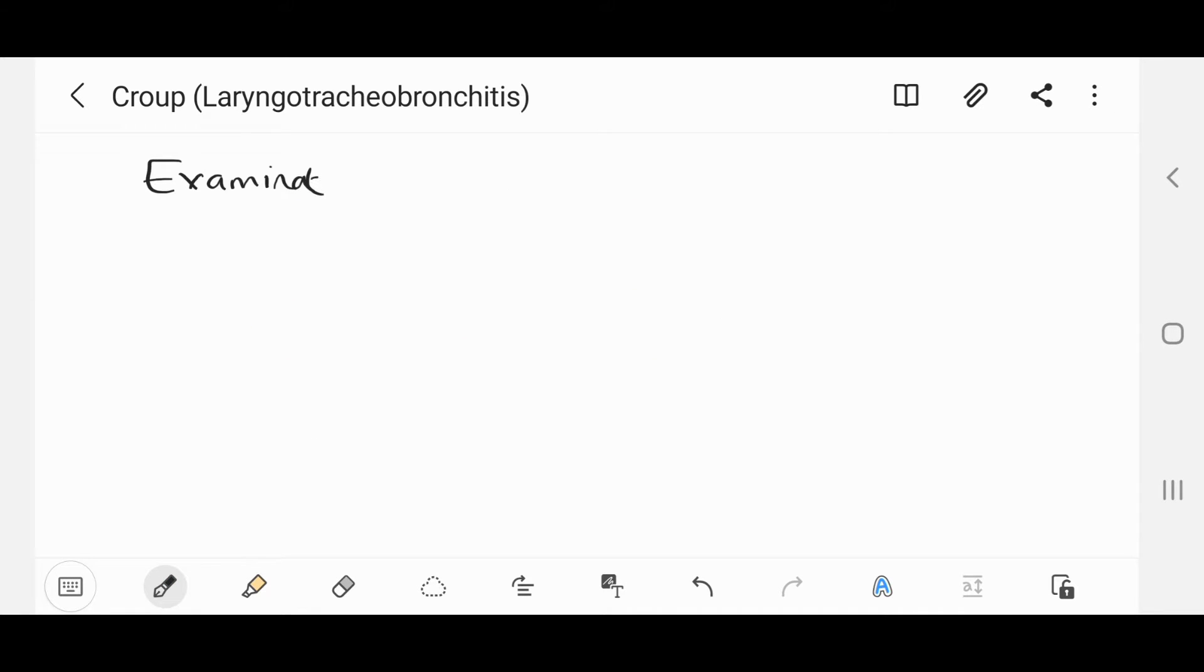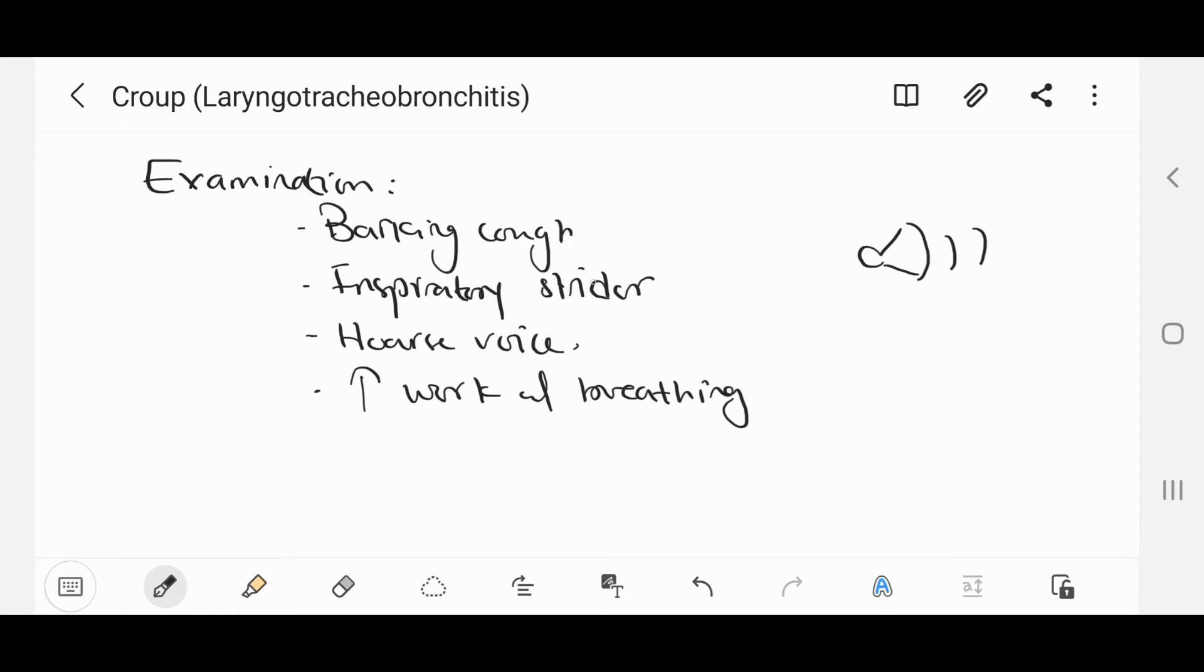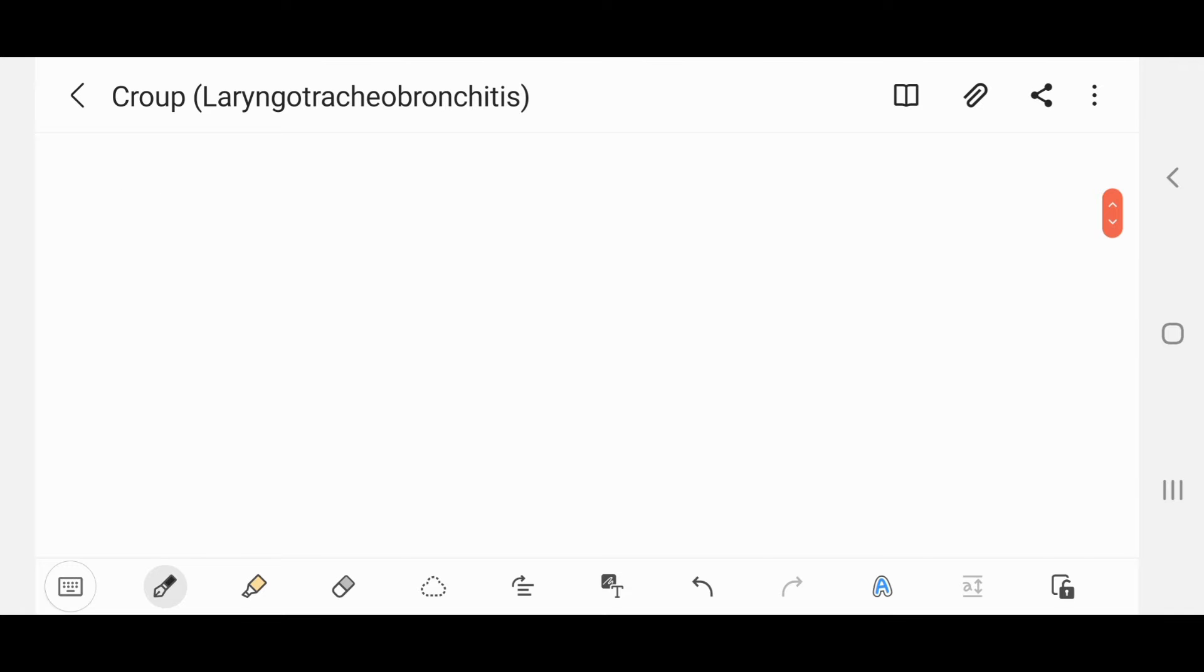In the examination of croup patients, we would find a barking cough, inspiratory stridor, a hoarse voice. The child may have associated widespread wheezing and increased work of breathing. Now you will hear the stridor, and this is the barking cough.